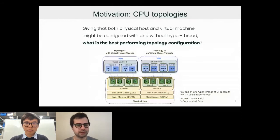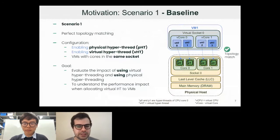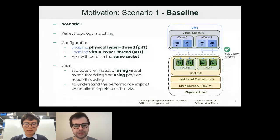This is the baseline, what we call perfect topology matching. We have the VM topology, the virtual topology, the same as the physical topology in the host. For example, here we have a host with one socket, a theoretical host here, so only two cores and each core has enabled two hyperthreads. The virtual topology has two hyperthreads and the same configuration. This will be used as our baseline configuration to compare to the other scenarios.